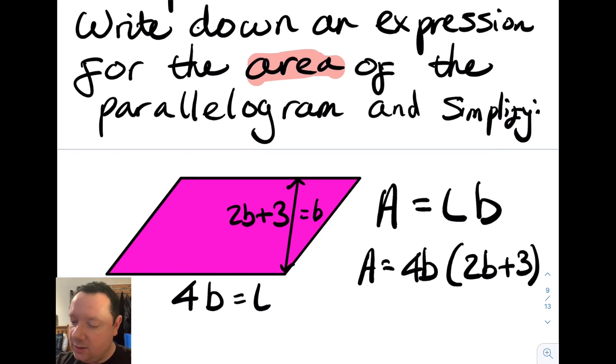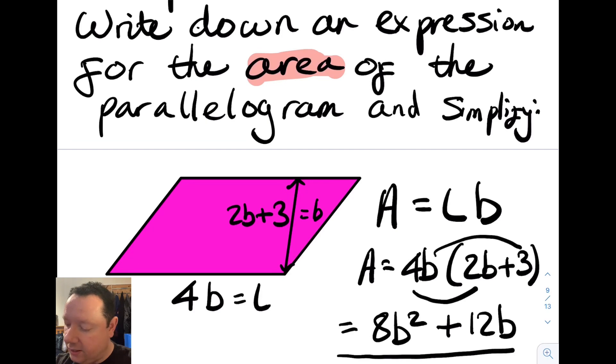And now it says I have to simplify it somehow. Well, I've got an expression. Remember, an expression is just a bit of algebra. It's got a bracket, so to simplify, we do what we did in the previous examples. We expand the bracket. So 4b times 2b equals 8b squared. 4b times 3, 3 times 4 is 12, plus 12b. Those two terms are different. b squared, remember, and b are not the same term, so I've now simplified it. I am finished.